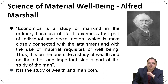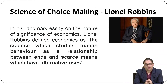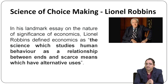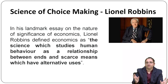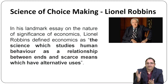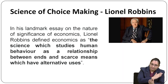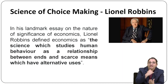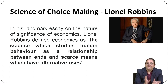Moving to the third definition, science of choice making, given by Sir Lionel Robbins. In his landmark essay on the nature and significance of economics, Robbins defined economics as the science which studies human behavior as a relationship between ends and scarce means which have alternative uses. We have limited resources and unlimited needs, so we must manage limited land, labor, and capital to meet the unlimited needs of society.